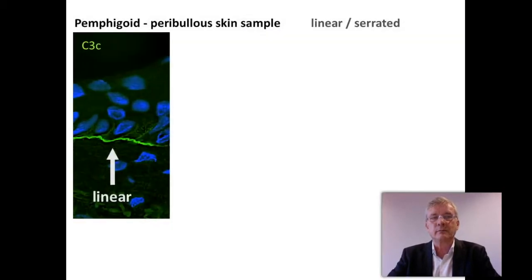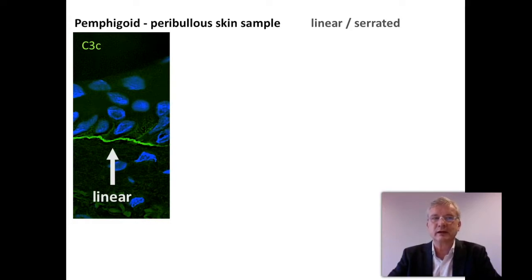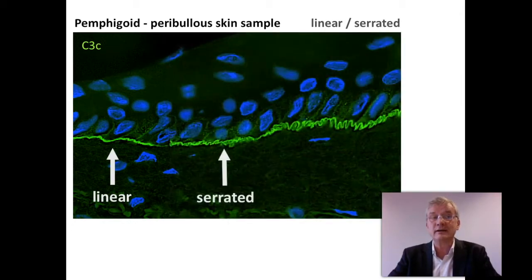Here is an example of a perilesional skin sample of pemphigoid, with at the left side a linear deposition pattern in the epidermal basement membrane zone, and at the right side a serrated deposition pattern.